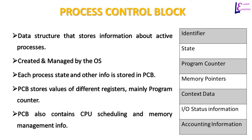A process control block is a data structure that stores information about active processes, or more accurately a running process. It is created and managed by the operating system. Each process state and other information is stored in the process control block. It can have information about registers used by the running process, as well as CPU scheduling and memory management information. The table to the right shows information that may be stored in a process control block: a process identifier, state of the process, register information, memory pointers, and context data or data that may be referred to by a processor.